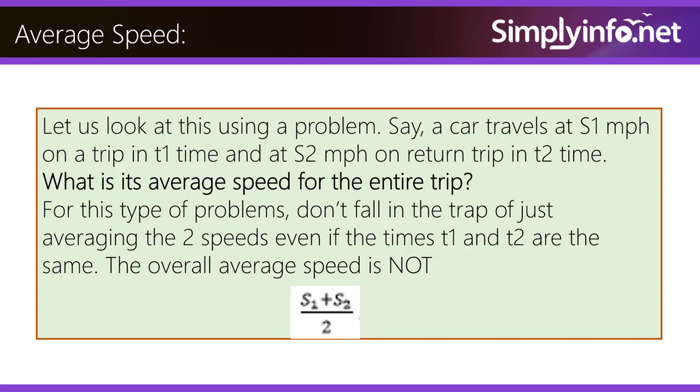Let us look at this using a problem. Say a car travels at s1 miles per hour on a trip in t1 time and at s2 miles per hour on return trip in t2 time. What is its average speed for the entire trip?